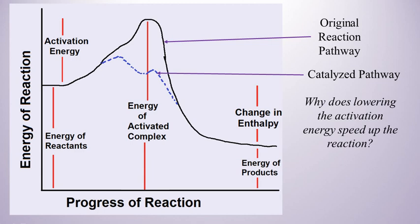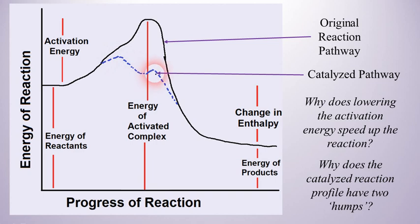Now, why does lowering the activation energy speed up the reaction? Well, that's because since we have a lower activation energy, more molecules are able to attain that activation energy. And so they're able to move more quickly. Now, this catalyzed reaction has two humps because we're actually changing the way that the reaction takes place. We are turning this reaction into a two-step process. There's the first step, the first hump, and the second step, the second hump.